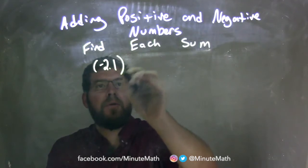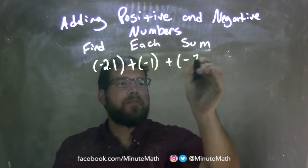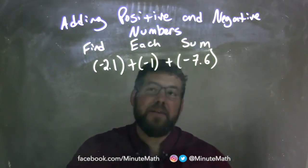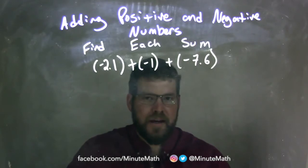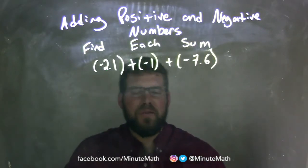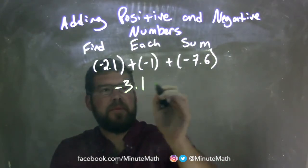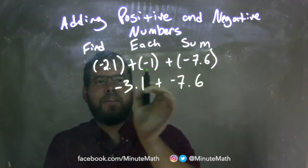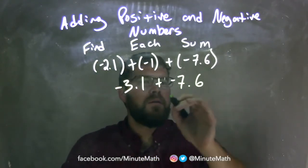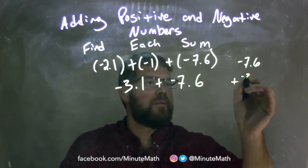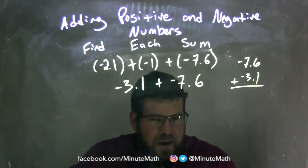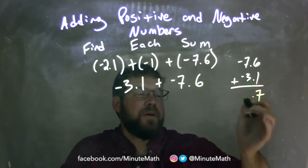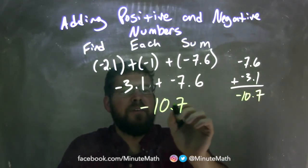Negative 2.1 plus a negative 1 plus a negative 7.6. They're all negative, so our final answer is also going to be negative. Negative 2.1 plus a negative 1 is negative 3.1. Then I bring down the negative 7.6. Since they're both negative, I add like positive numbers and make the answer negative: 0.6 plus 0.1 is 0.7, and negative 7 plus negative 3 is negative 10. So negative 10.7 is my final answer.